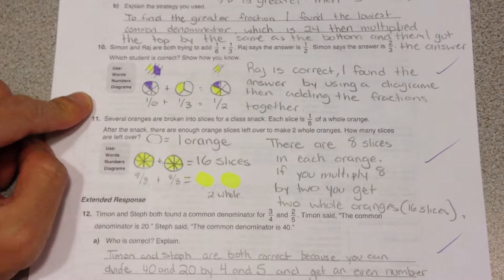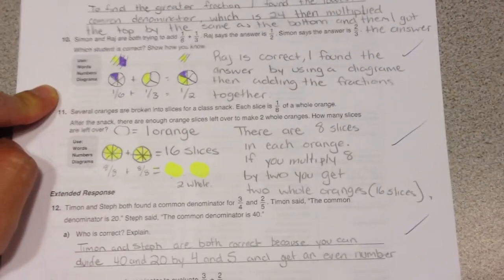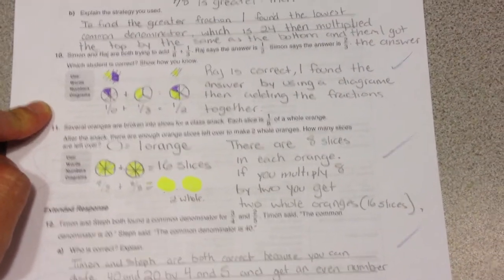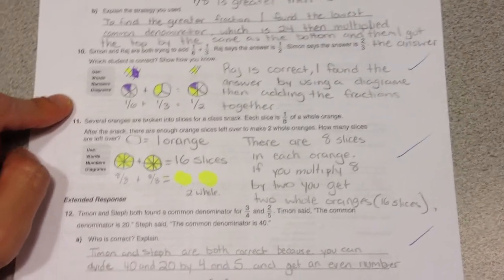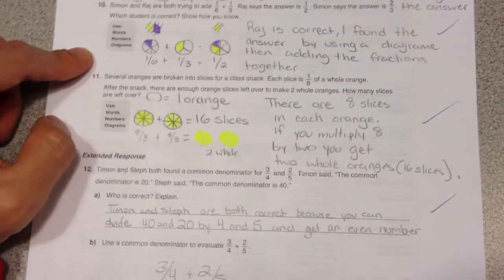Question 11, 16 slices left. If each slice was an 8th, then if there were 2 whole oranges left, then there must be 16 slices left.